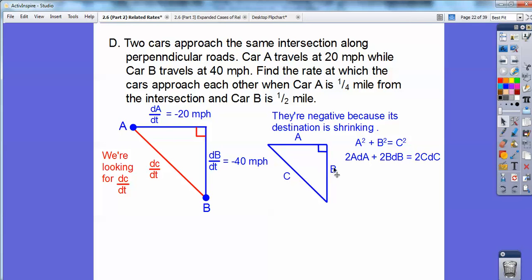And when I implicit differentiate, I get 2ADA plus 2BDB equals 2CDC. Now I know 2. Do I know A? I do. It's a quarter of a mile at my specific time. And B is a half of a mile. So I'm going to have to use the Pythagorean Theorem with another right triangle.